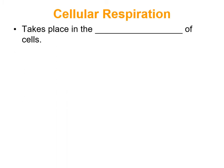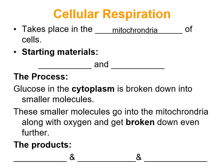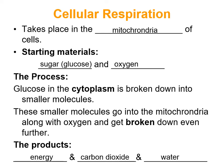Cellular respiration takes place in the mitochondria of cells — the mitochondria breaking down sugars to release energy. The starting materials are glucose and oxygen. Glucose in the cytoplasm is broken down into smaller molecules, which go into the mitochondria along with oxygen and get broken down even further. The products after these chemical reactions are energy, carbon dioxide, and water. Energy is what you want; carbon dioxide and water are the waste products.